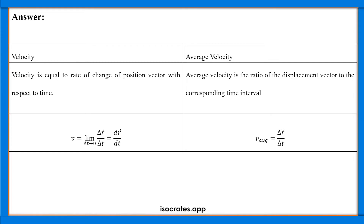Basically, velocity means: at 5 seconds, what is the position of the particle; at 10 seconds, what is the position of the particle; at 15 seconds, what is the position of the particle. So each change in position with respect to time is the velocity of that object. In the case of average velocity, it's the ratio of displacement vector to the corresponding time interval — meaning we consider only the final and initial position of the object.